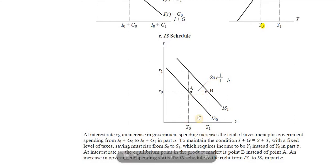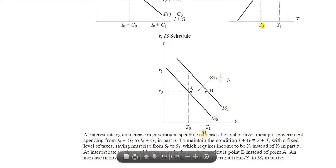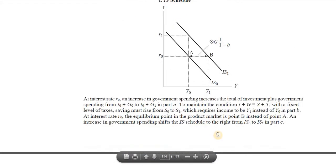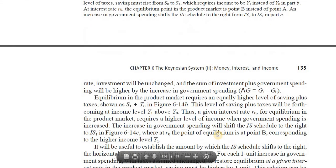Although government expenditure may increase by, say, 100 rupees, the increase in income would be 100 rupees multiplied by the multiplier. Just like the money multiplier, we have a government spending multiplier, investment multiplier, and foreign trade multiplier. The change in government expenditure multiplied by the multiplier gives the exact level of increase in income.